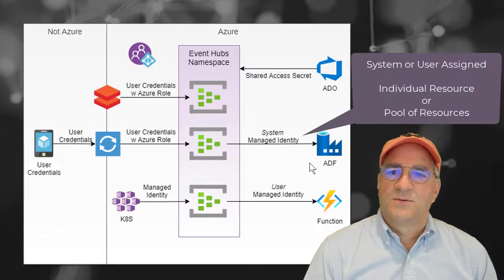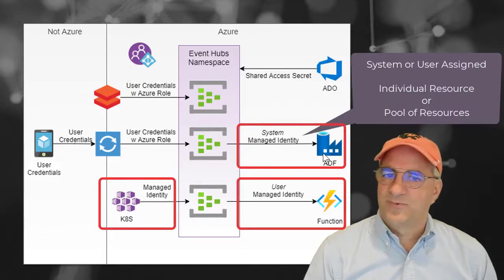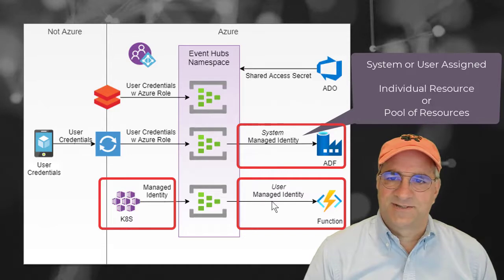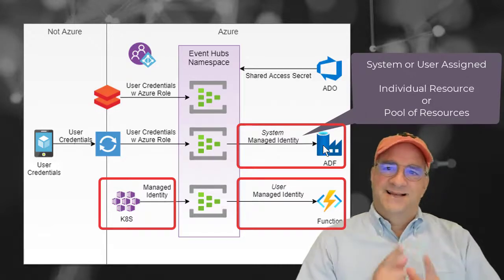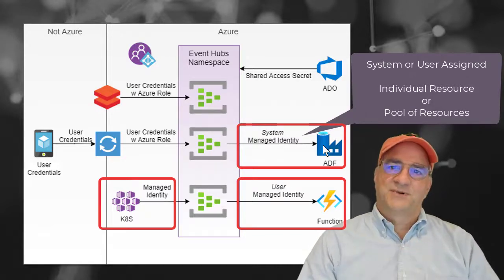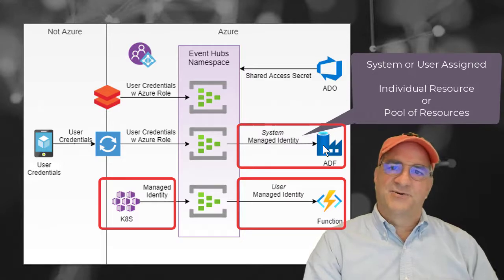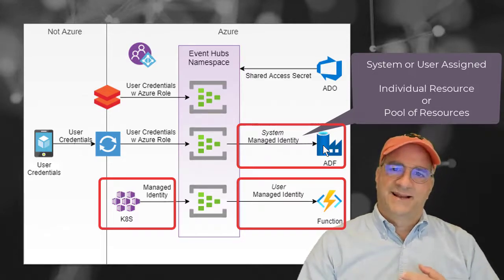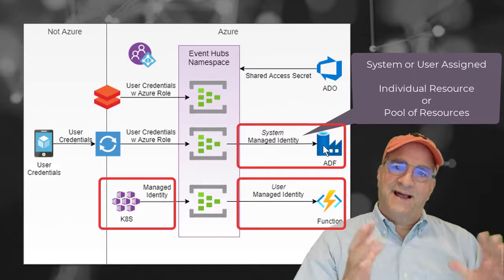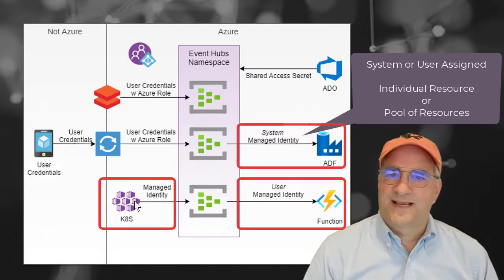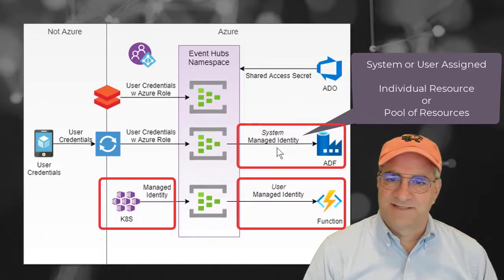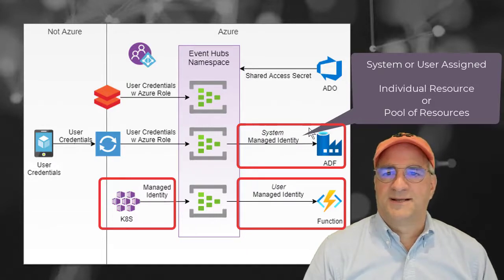The next one really applies to Azure resources, and I really like these — these are managed identities. I've got three examples here: one's a system managed identity, one's a user managed identity. Basically, an identity is an identity that can be added to an Azure resource, so when that resource makes a call to another Azure resource, you know what the identity of that is. If I had an ADF pipeline and a Kubernetes app, I might give them both the same managed identity — in that case it would be user, not system.